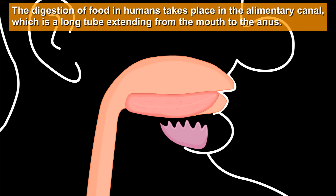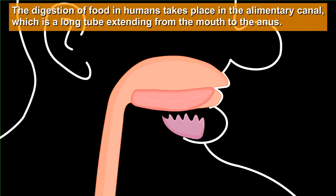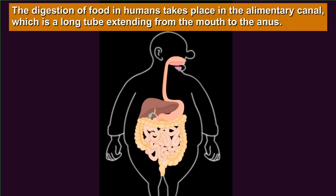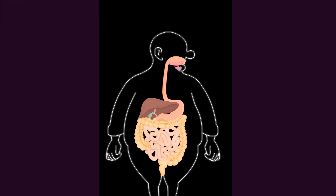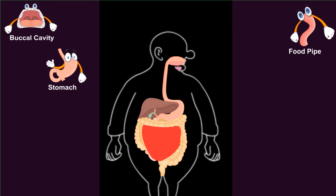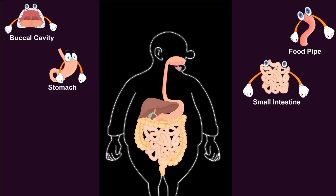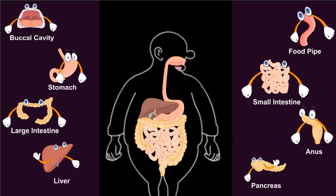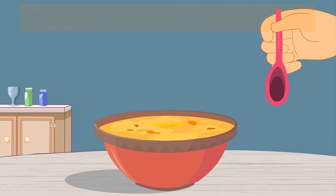The digestion of food in humans takes place in the alimentary canal, which is a long tube extending from the mouth to the anus. The different parts of the alimentary canal are the buccal cavity, food pipe or esophagus, stomach, small intestine, large intestine, and anus. Two glands, namely the liver and pancreas, also help in digestion.